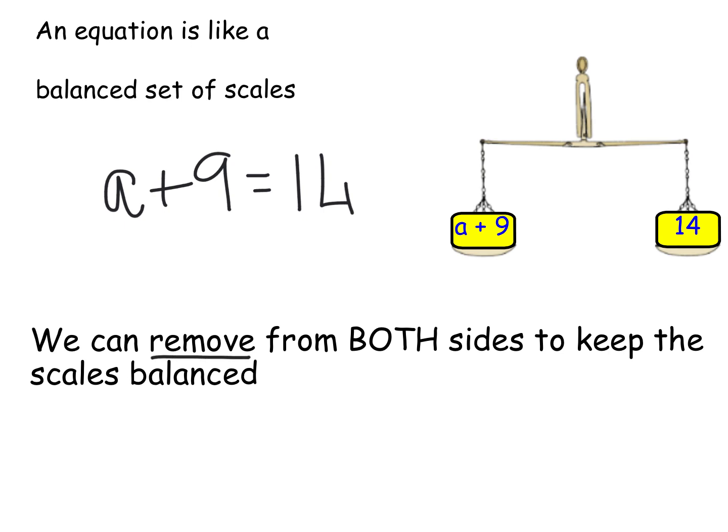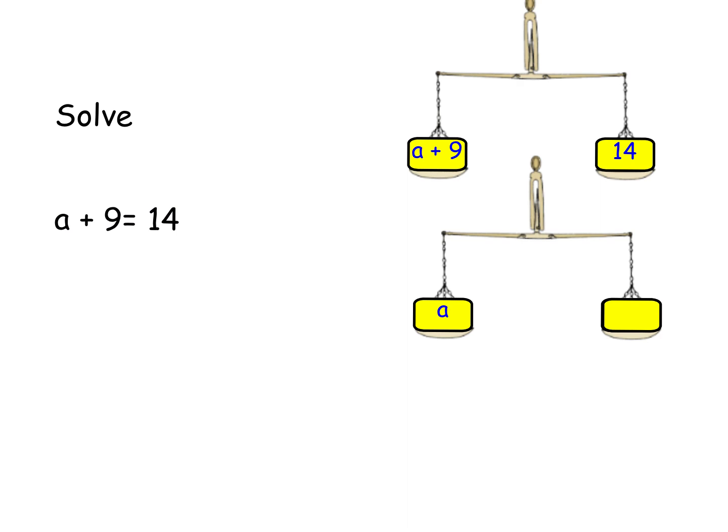What we're trying to do is show you a method that will work even when the numbers become so much more complicated that you can't just look at it and know the answer. We have to remove something from both sides to keep the scales balanced. Although I've said remove, sometimes we need to add things on. We're solving equations. The goal in any equation is to find out what A is, and to do that, you have to isolate A on its side.